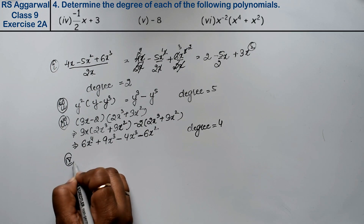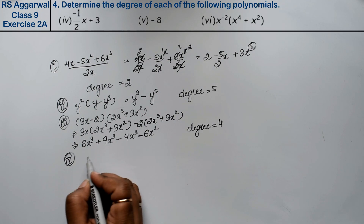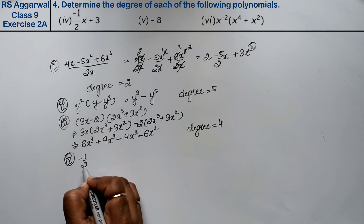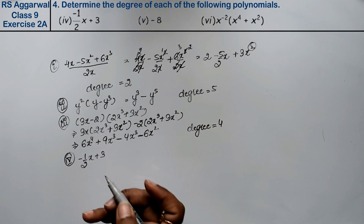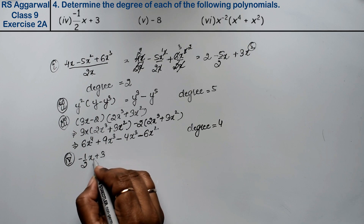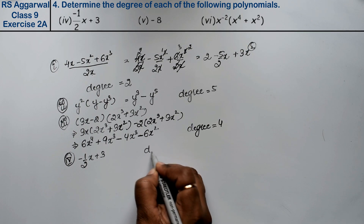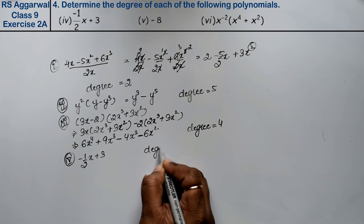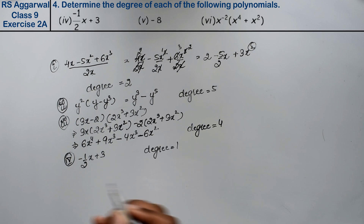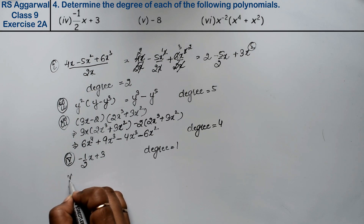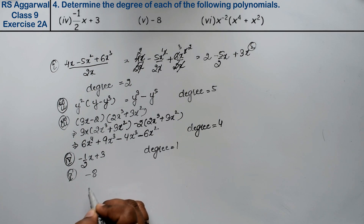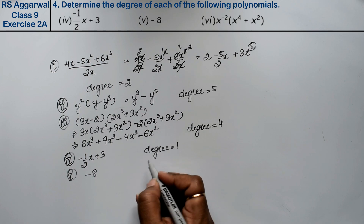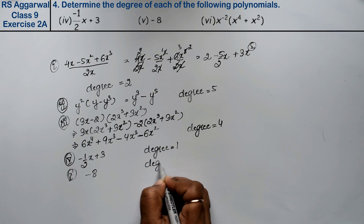Let's do the fourth part. Fourth part is minus 1 upon 2x plus 3. You can see that you don't need to solve it further — degree is 1. Fifth part is minus 8. There is no variable here, so degree is 0.